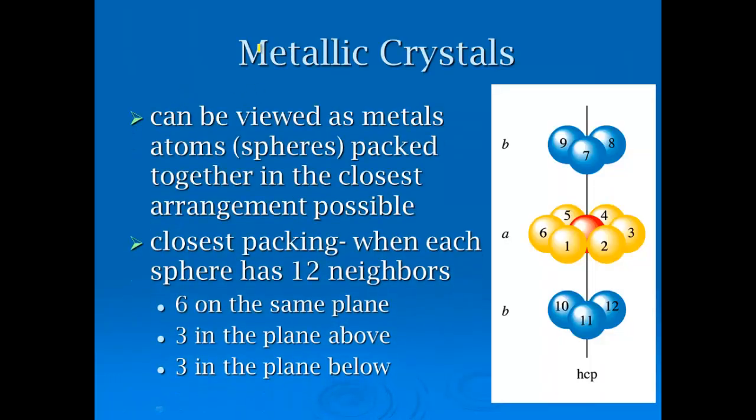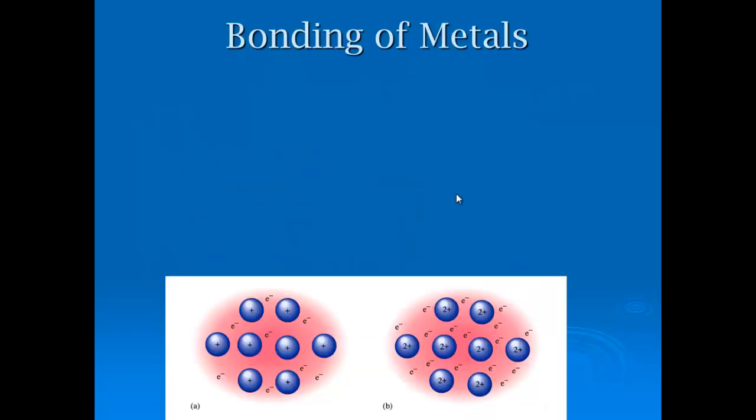Metal bonding. Metallic crystals can be viewed as metal atoms or spheres packed together in the closest arrangement possible. The closest packing possible is when each sphere has 12 neighbors, where you have six on the same plane that completely surround it, three on top because they settle into the grooves, and then three on the bottom. It's just an example to show you how these things actually start to go together, but I'm not going to ask you to explain this specifically in terms of a memorization point.